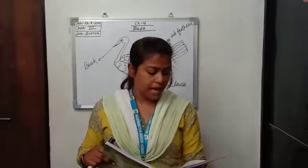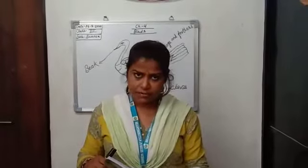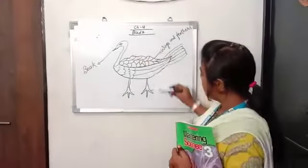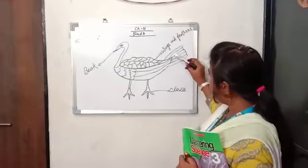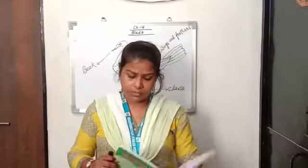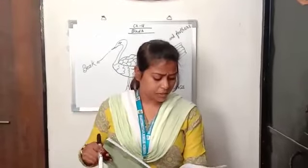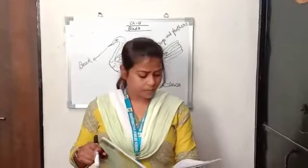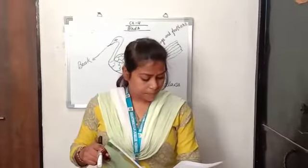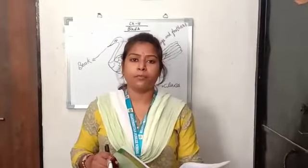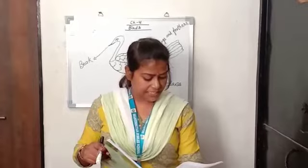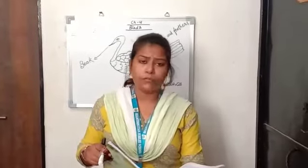Their beaks and claws help them catch prey and build nests. Here is a picture of a bird showing beaks, claws, wings and feathers. Now we will learn about wings and feathers. BOTS fly with the help of wings. They flap their wings upward and downward to fly.